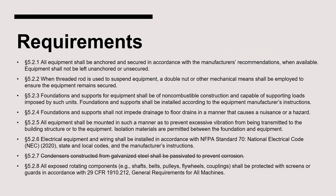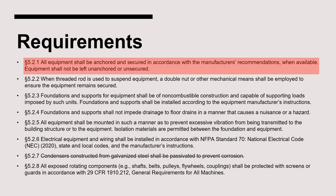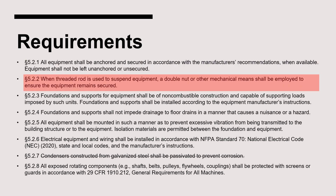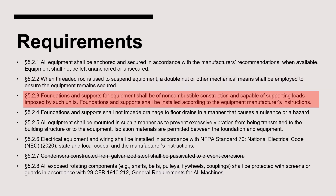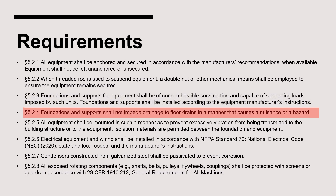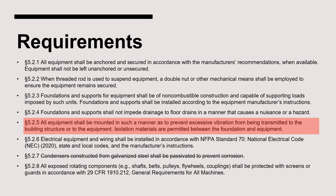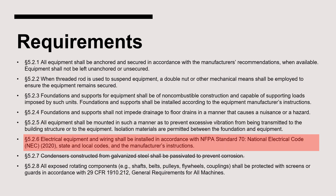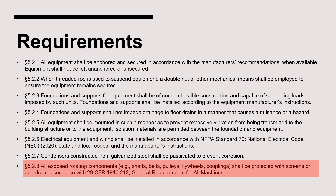The requirements on this page are applicable to all ammonia refrigeration equipment, and the second to last item does not pertain to air cooling evaporators. All equipment must be anchored and secured. When equipment is suspended, double nut fasteners must be employed. Foundations and supports must be non-combustible and designed for the load they will carry, and must not impede drainage to floor drains. Equipment must be mounted to prevent excessive vibration. Electrical equipment must conform to the National Electric Code. And rotating components must be protected with screens or guards.